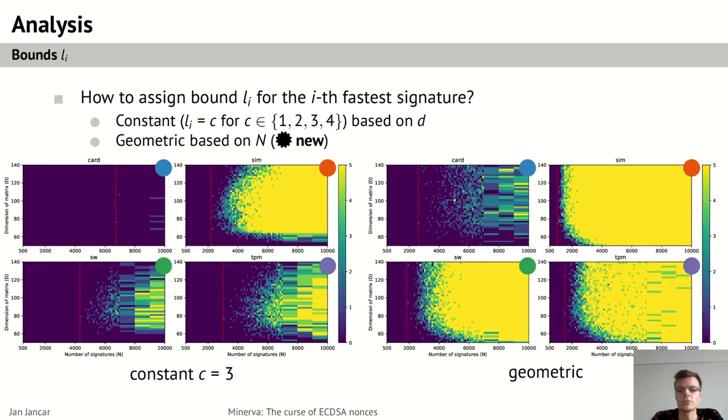Using geometric bounds gives us a large improvement to the success rate of the attack as visible from this heatmap of the number of successes of the attack out of five tries on the four datasets. So we have the constant bounds with C equal three, so we're kind of claiming three leading zero bits for all the D signatures on the left, and on the right you have our geometric bounds. And you have the color coded datasets there and you can see that it specifically improves the results on the card dataset which for the constant bounds there were only like four or five successes out of all the thousands of attack tries that we did.